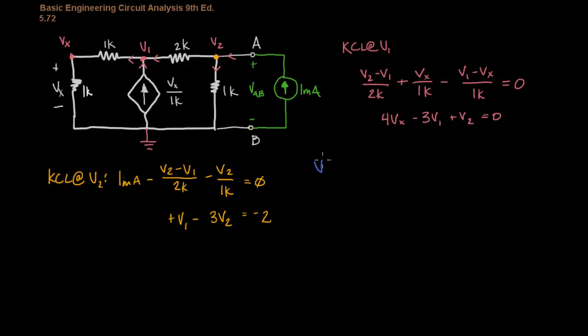Voltage division. We'll say that VX equals V1 times 1K over 1K plus 1K, or 2K, and the K's cancel, and we get VX is equal to one-half of V1.